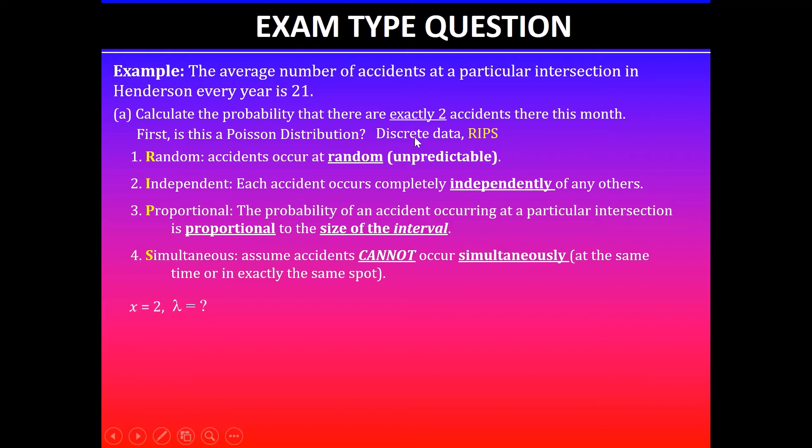We've given the information about 21 accidents every year, so I will need to divide 21 by 12 because there are 12 months in a year. And that gives you the lambda value of 1.75 accidents per month.